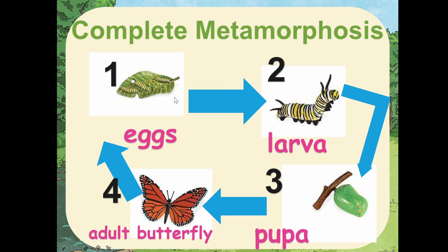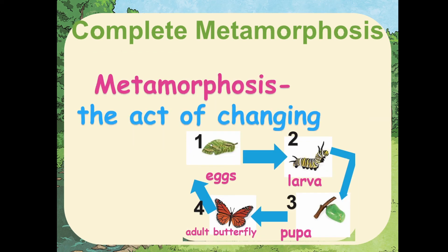Now guys, count the stages of the life cycle of a butterfly for me: one, two, three, four. So there are four stages of a life cycle of a butterfly. If the insect or animal has four stages of the life cycle, we call it complete metamorphosis. Metamorphosis is the act of changing — just like the butterfly: egg, larva, pupa, adult butterfly. There's a process of changing, and this process of changing is what we call metamorphosis. Say it with me: metamorphosis.